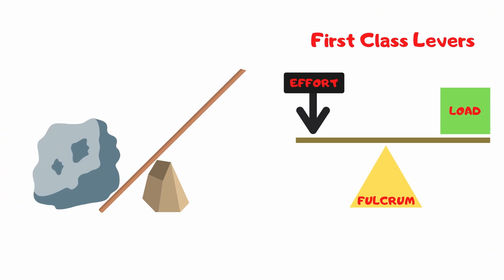The lever you use to lift the rock is a first-class lever. In a first-class lever, the fulcrum is located between the effort and the load. Some other examples of first-class levers are scissors and a car jack. Oh.